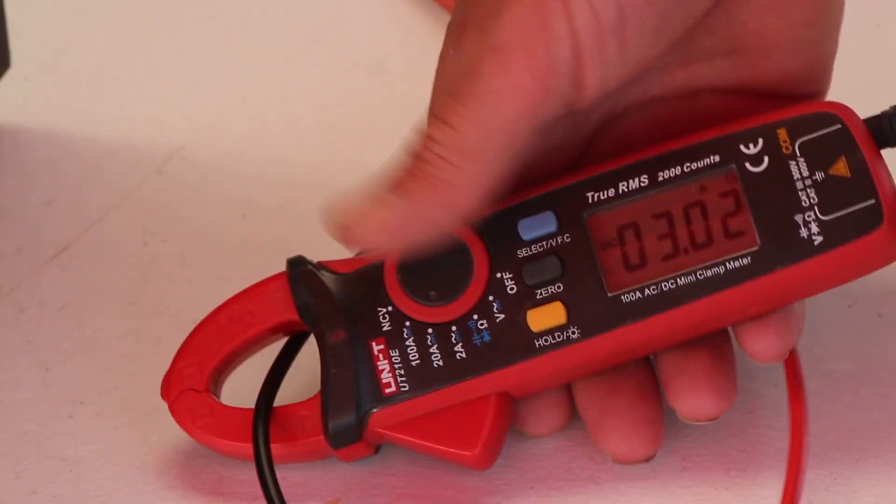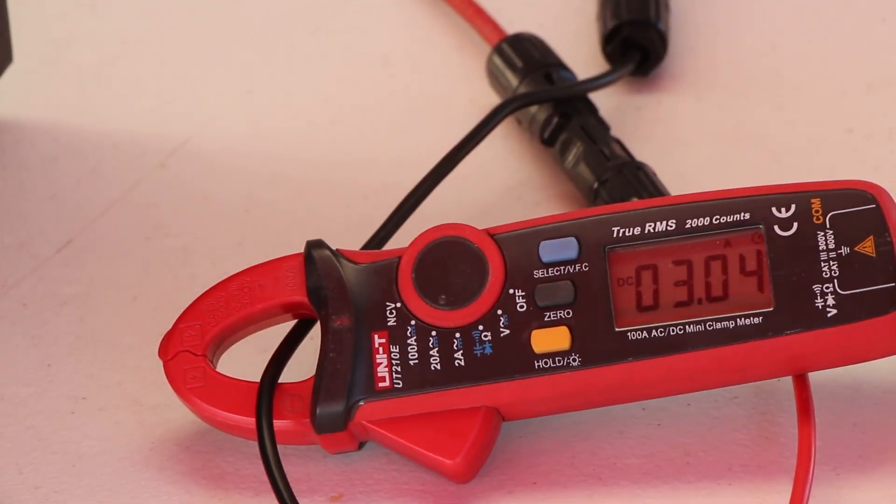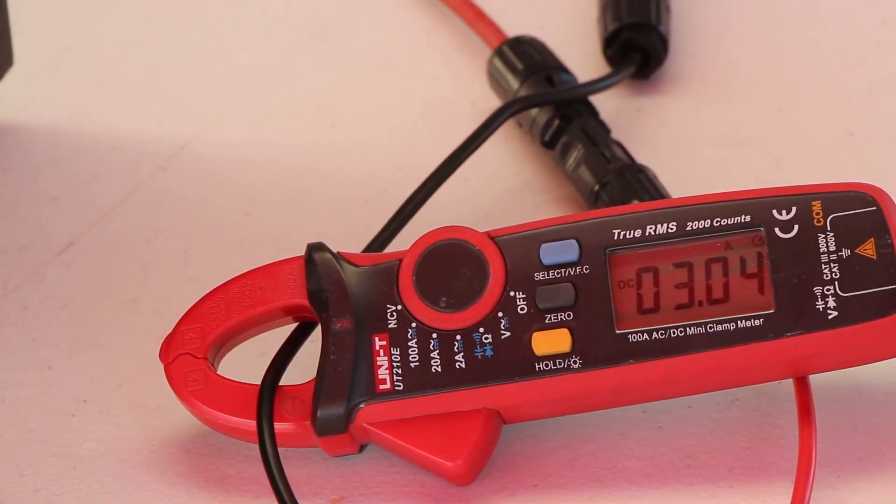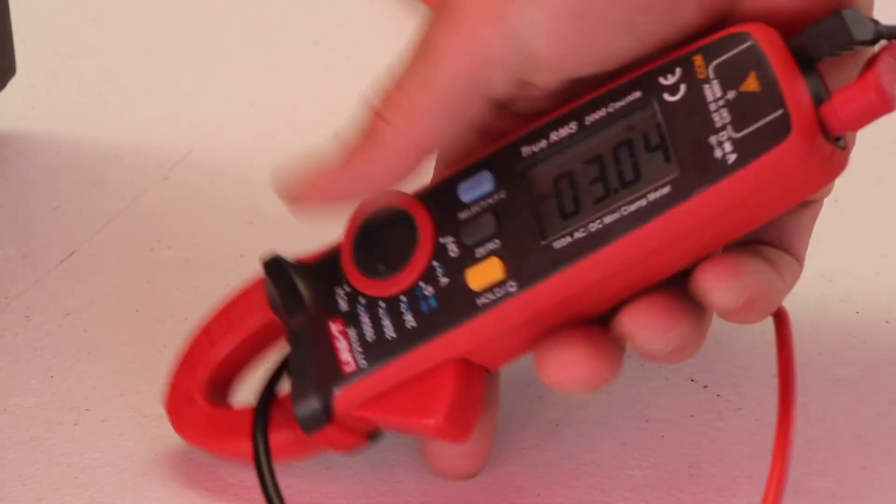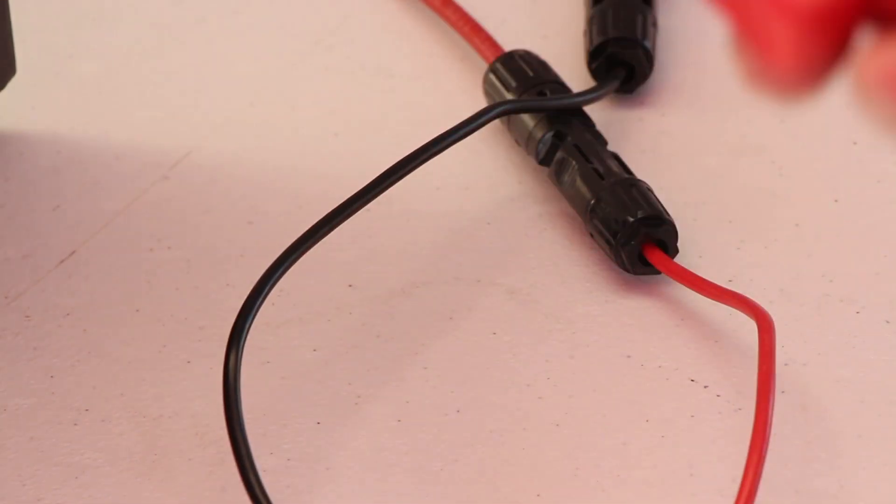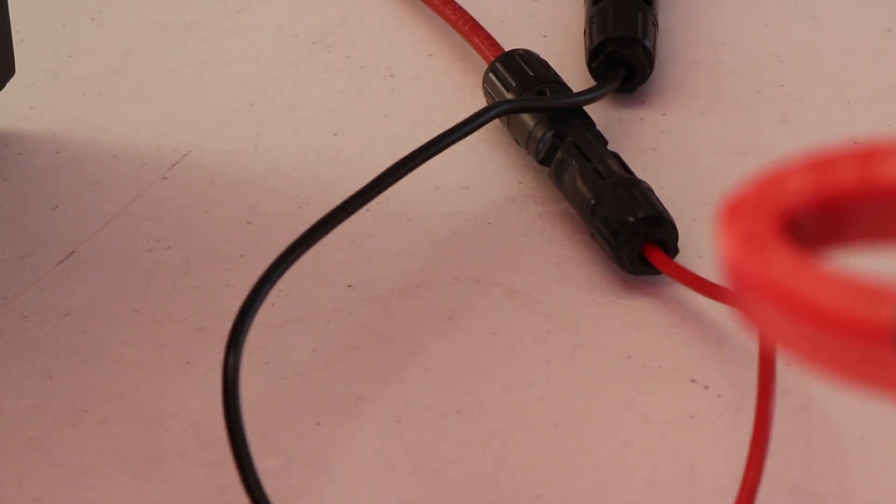So these solar panels are making 3 amps, which is about half what they should do, and their voltage was less. So by doing this we know that the problem is not with the Titan solar generator. It is working just fine.